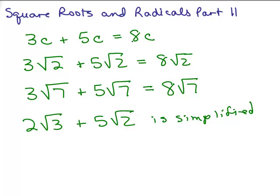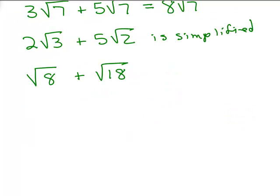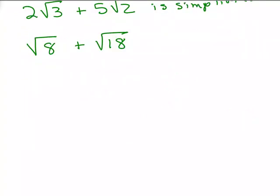It works very similar to how you do adding like terms, like 3c plus 5c equals 8c. Now what if you had something like square root of 8 plus square root of 18? These are unlike, but they aren't simplified either. So first we want to simplify the square root of 8 and the square root of 18 before deciding if you're going to be able to add them together.